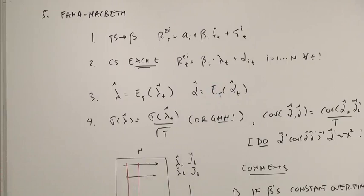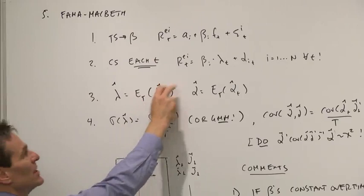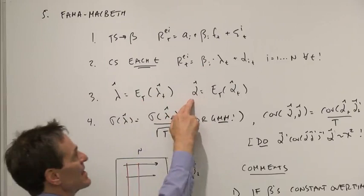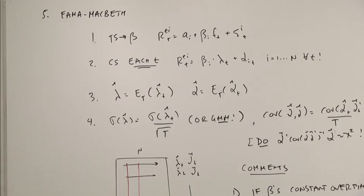Then our final estimate of the factor risk premium is going to be the average of the individual factor risk premiums we found in each time period. And the final estimate of the error is going to be the average of the errors in each individual time period.